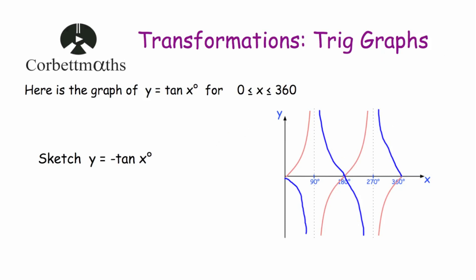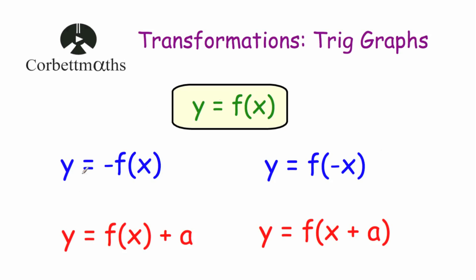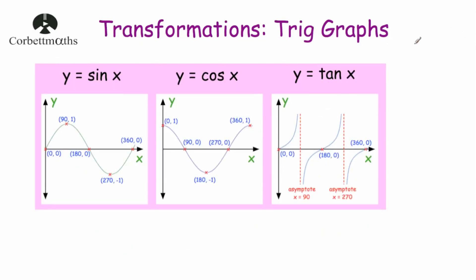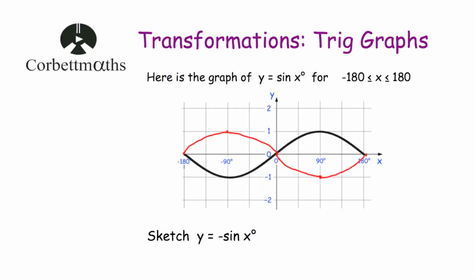With the transformations of trig graphs, it's very important that you know the four transformations at GCSE level: reflection vertically, reflection horizontally, translation vertically (up and down), and translation horizontally. Make sure you also know your trig graphs — what sin x, cos x, and tan x look like. Then it's just a matter of applying those transformations, and it can be really useful to consider the key points and where they move when you apply the transformation.